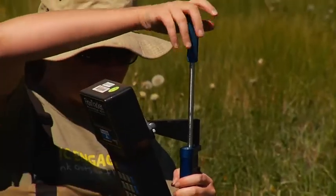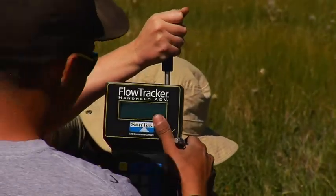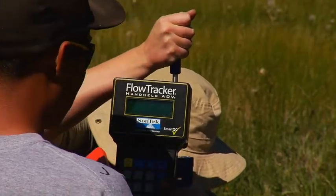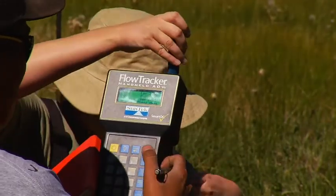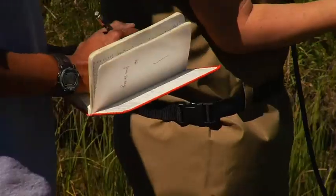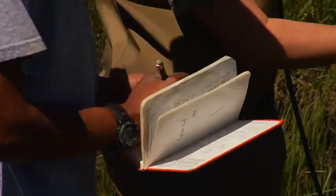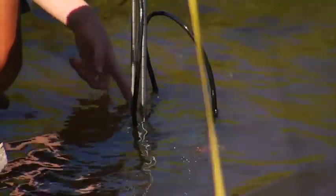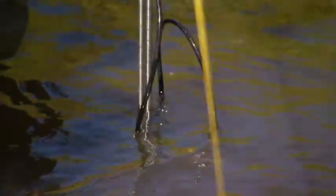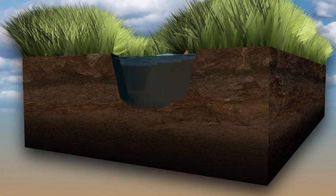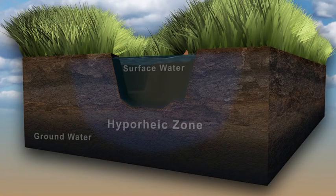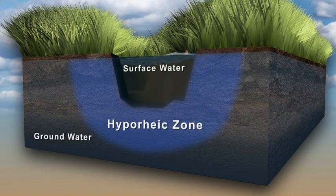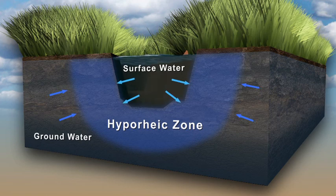Researchers are sampling for phosphorus and nitrogen as nutrients in the system and comparing pH and dissolved oxygen levels in the hyporheic zone of the stream. The hyporheic zone, as we can see in this diagram, is the interface or border between the surface water and the groundwater.